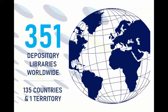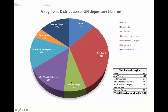Currently we have 351 UN Depository Libraries around the world in 135 countries and the state of Palestine. This means that about one-third of the 193 UN member states do not have a Depository Library right now. This chart shows the regional distribution of UN Depository Libraries around the world. The highest number of Depository Libraries is found in Asia, closely followed by the Americas, and Europe next. Fewer Depository Libraries are located in Africa and the Middle East.